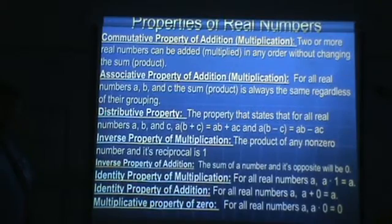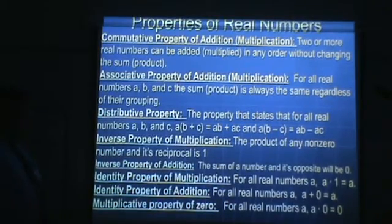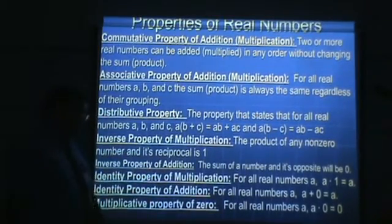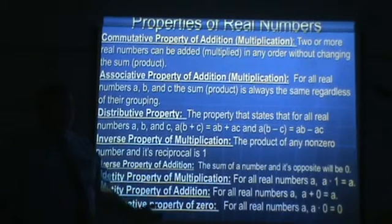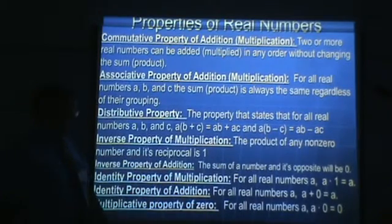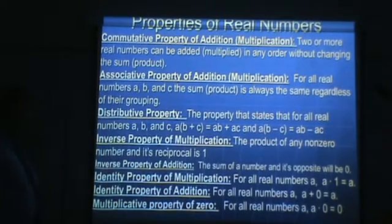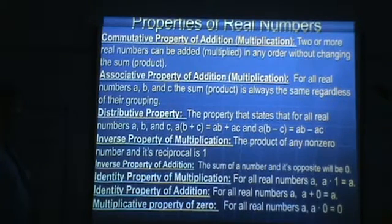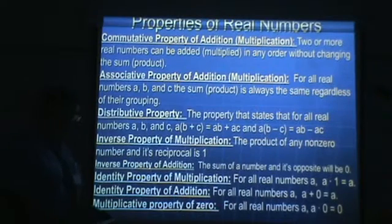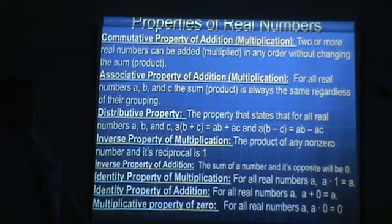The identity property of multiplication says that for all real numbers A, A times 1 is equal to A. When you multiply by 1, the identity or value of the number does not change. The identity property of addition is when you add zero to a number and it does not change its value — A plus zero is still A. The multiplication property of zero states that for all real numbers A, if you multiply by zero, the result will be zero. Anytime you multiply by zero, the result will be zero.